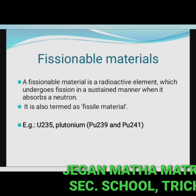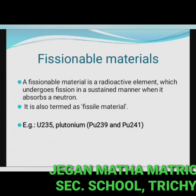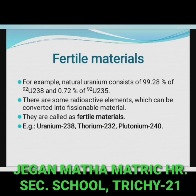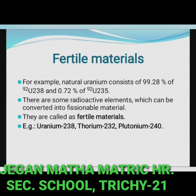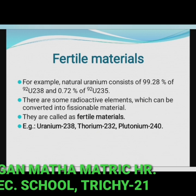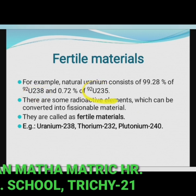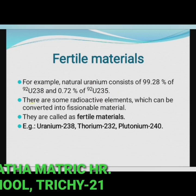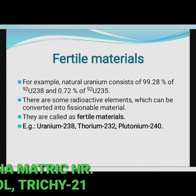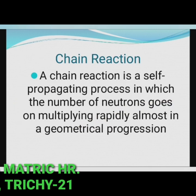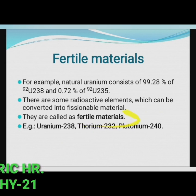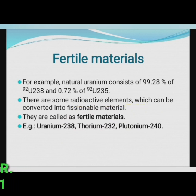To summarize: a fissionable material is a radioactive element which undergoes fission in a sustained manner when it absorbs a neutron, and is also termed as fissile material. Not all isotopes of uranium undergo nuclear fission — uranium-235 is fissionable while uranium-238 is non-fissionable. Some radioactive elements can be converted into fissionable material; these are called fertile materials.